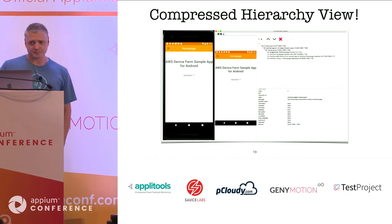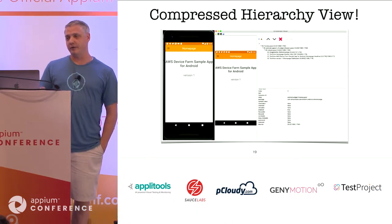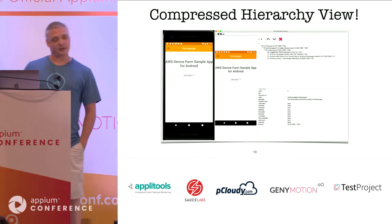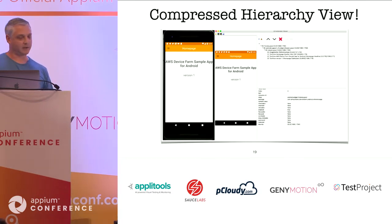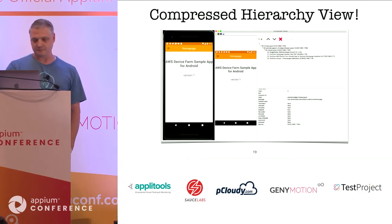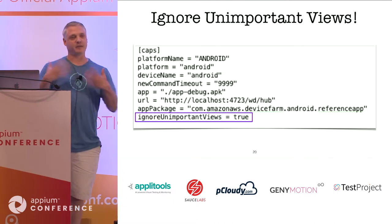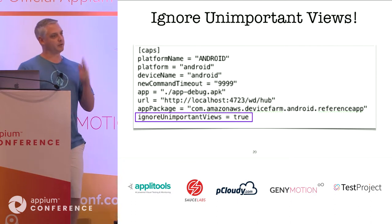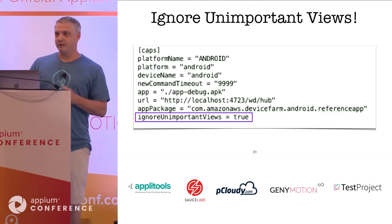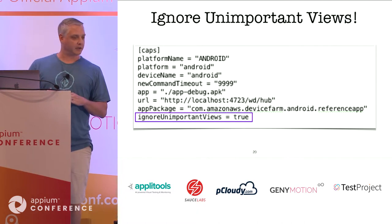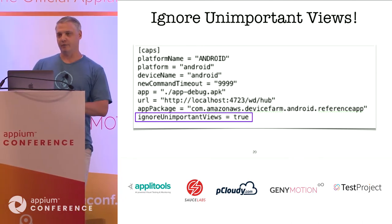Unfortunately there's not enough information returned on the page method to do a proper crawl. So now we have the compressed hierarchy viewer. This is a lot less information, but it's actually good because this is only the information relevant to the views I actually need — only the objects I can visibly see on the UI. It still gives me all the attributes I need. The Appium devs implemented a capability called 'ignore important views' which gives you this compressed hierarchy.